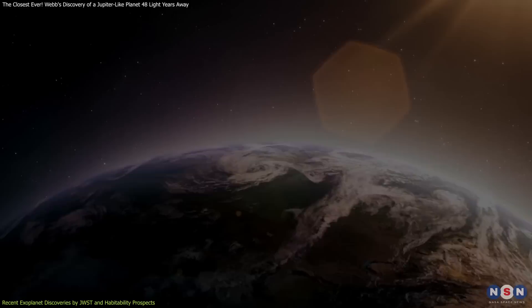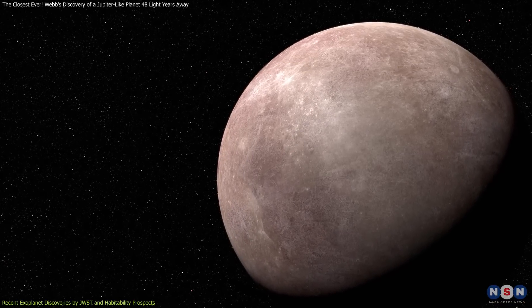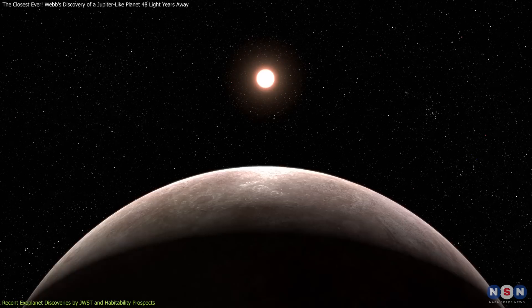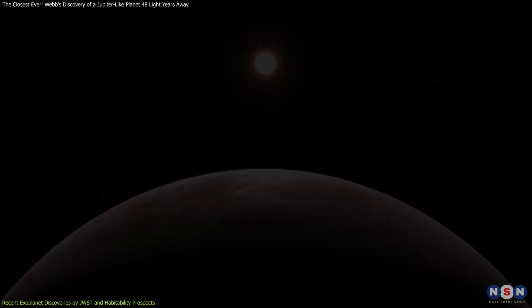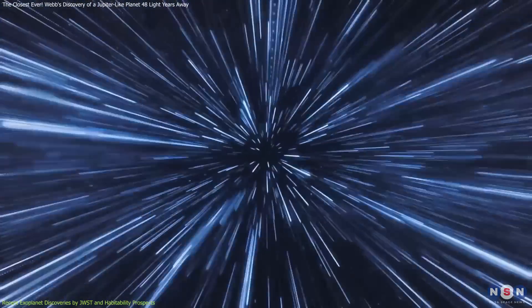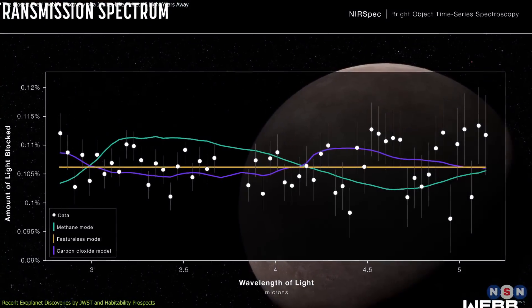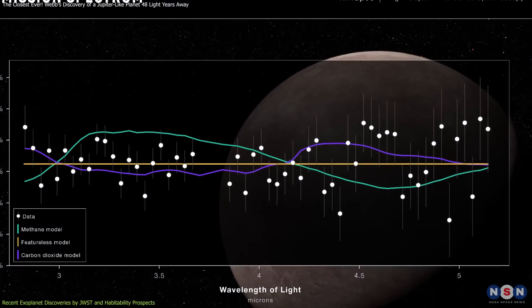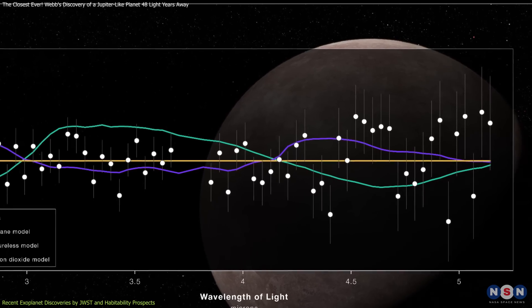And not to forget LHS-475b is among the closest exoplanets studied by Webb. Located about 41 light-years away, it presents an exciting opportunity for detailed atmospheric studies due to its proximity to Earth.